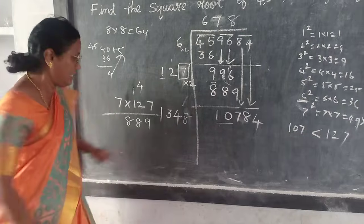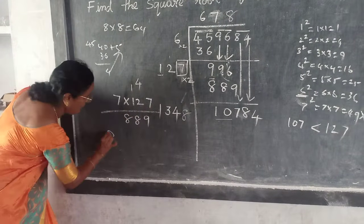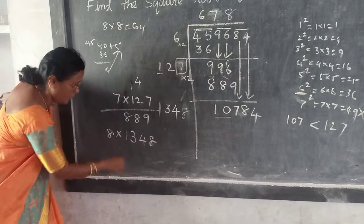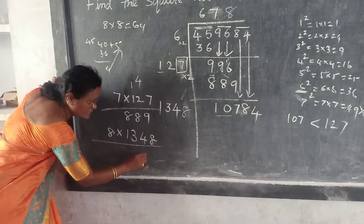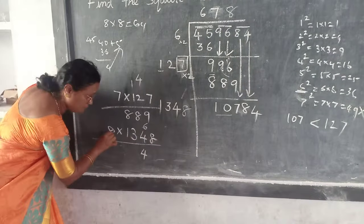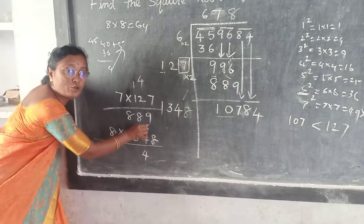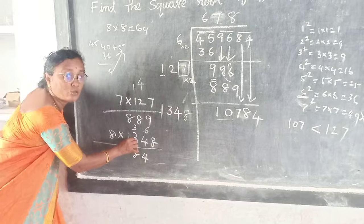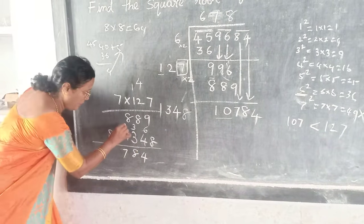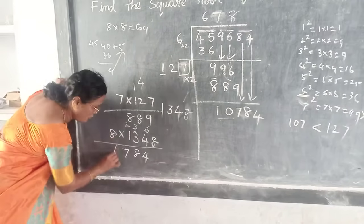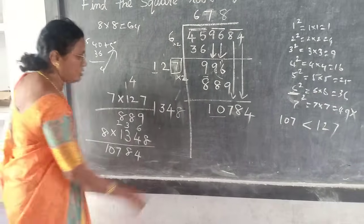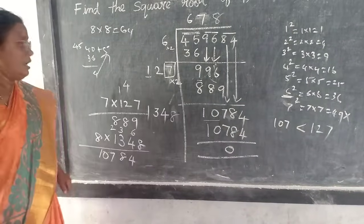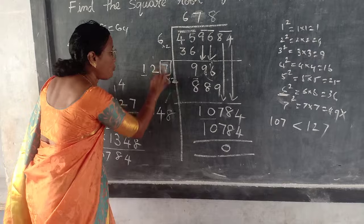8 eights are 64. 8 — choose. What is the number? Now multiply: 8 into 1448. Do it in rough work. 8 eights are 64, reminder 6. 8 fours are 32, 32 plus 6 is 38, reminder 3. 8 threes are 24, 24 plus 3 is 27, reminder 2. 8 ones is 8, 8 plus 2 is 10. That is the number — check. 11584. 8000 is correct.